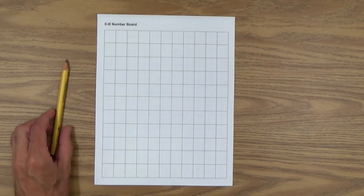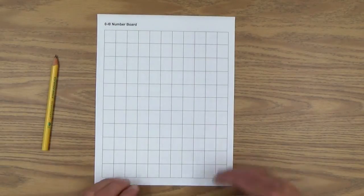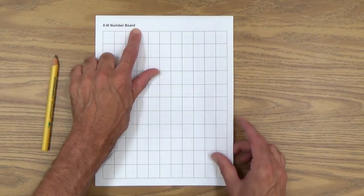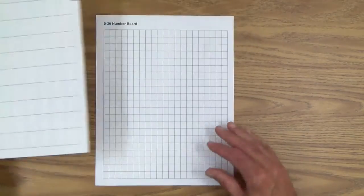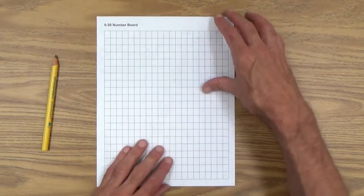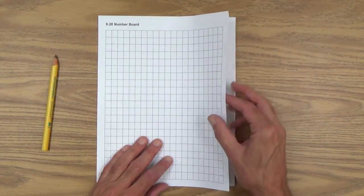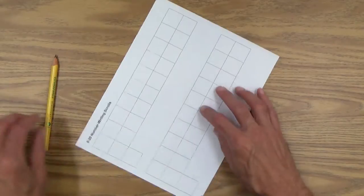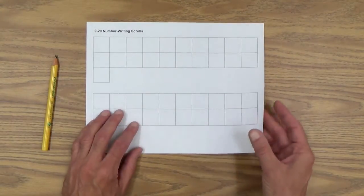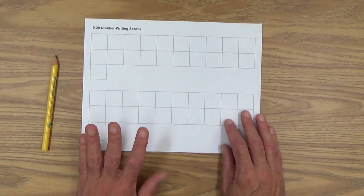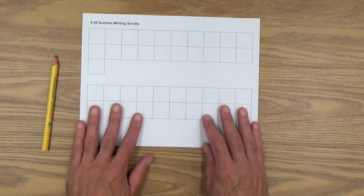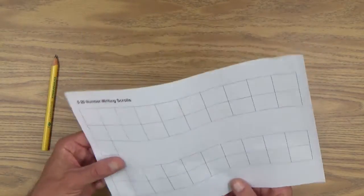A pencil or pencils. This is called the 0 to 10 number board. And we have the 0 to 20 number board. And finally, we use this in the last lesson, the 0 to 20 number writing scrolls. And of course, these are printables and you can make copies of these by going to the early gifted manual.